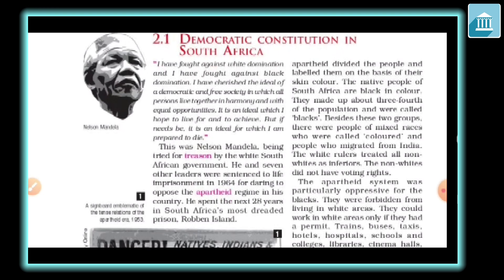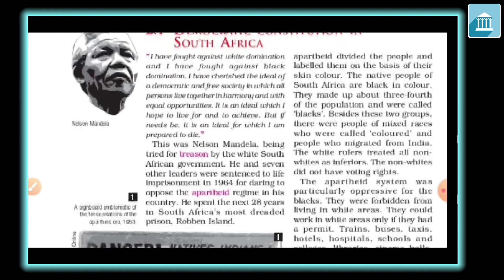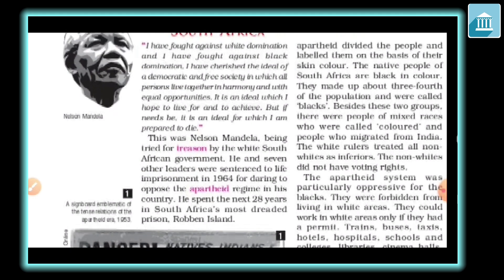South Africa's great leader Nelson Mandela gave a famous speech. Here are a few extracts: 'I have fought against white domination and I have fought against black domination. I have cherished the ideal of a free and democratic society in which all persons live together in harmony. It is an ideal which I hope to live for and to achieve. But if needs be, it is an ideal for which I am prepared to die.'